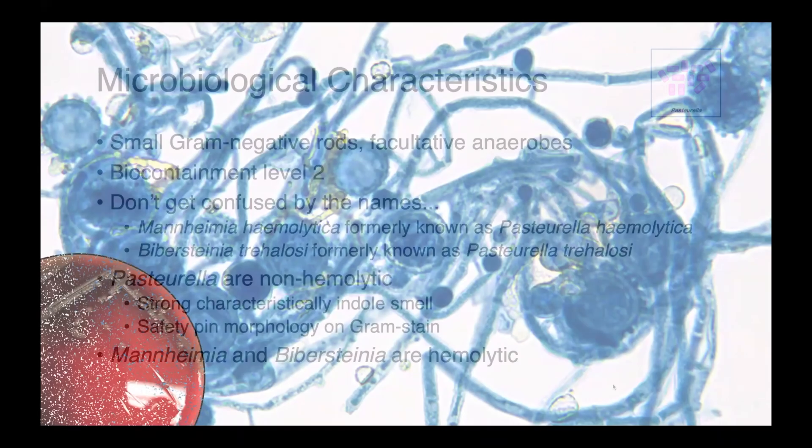In today's lecture, we're going to be talking about a few key members of the bacterial family the Pasteurellaceae. Pasteurella multocida is a very promiscuous pathogen, which causes economically damaging and potentially life-threatening infections in a variety of animal species and also people.